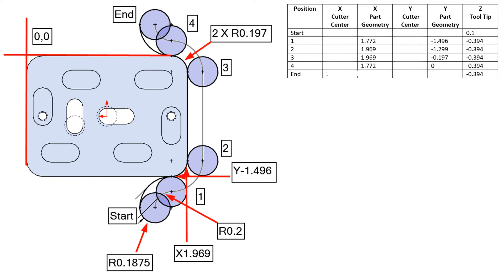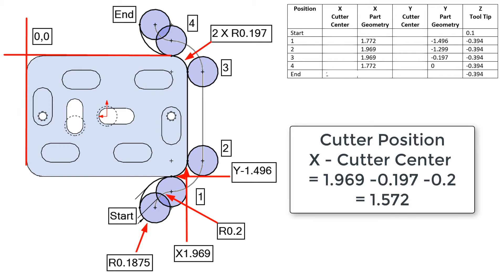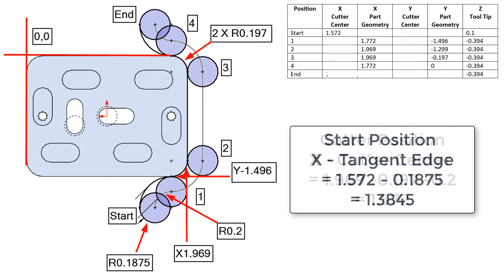Let's begin by calculating the X coordinate for the cutter center at the start position. I'll start with the length of the part, which is 1.969, then minus the part radius of 0.197, then minus the 0.2 radius because the arc sweeps through 90 degrees, and the X coordinate will be 1.572. Next, the X coordinate for the cutter tangent edge will be 1.572 minus the cutter radius, which equals 1.3845.